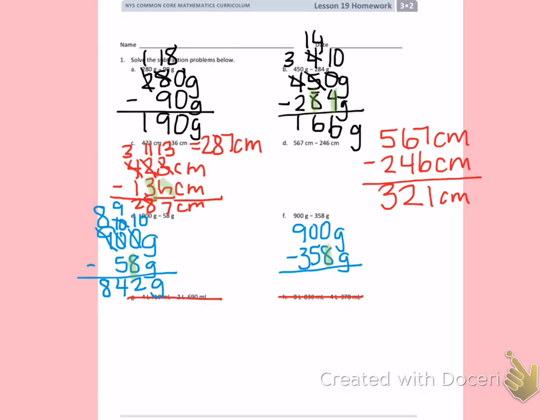So I will regroup from the 9 and turn it into an 8. The tens place will turn into a 10. I will borrow from that and turn it into a 9. And the zero in my ones place will become a 10. 10 minus 8 is 2. 9 minus 5 is 4. 8 minus 3 is 5. 542 grams.